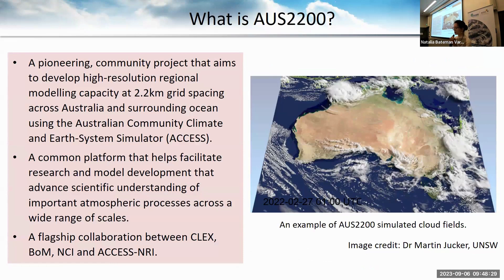I'd like to give you a bit of background on this project — what is Australia 200 and what we aim to achieve. Australia 200 is a community-based project that aims to develop high-resolution atmosphere and regional modeling capacity, initially at 2.2 kilometre grid spacing across Australia and surrounding ocean using the Excess regional model. The project represents a partnership collaboration between CLECS, the Bureau, NCI, and Excess.